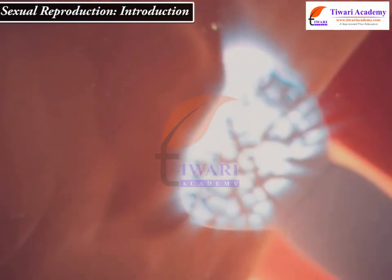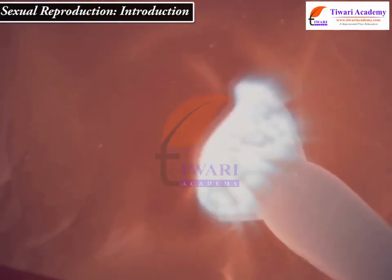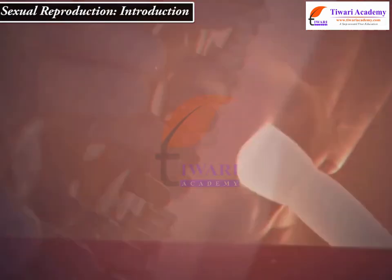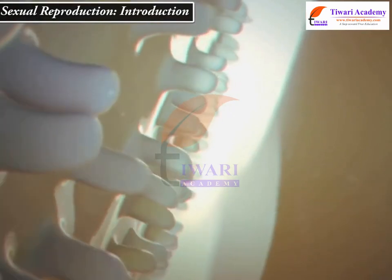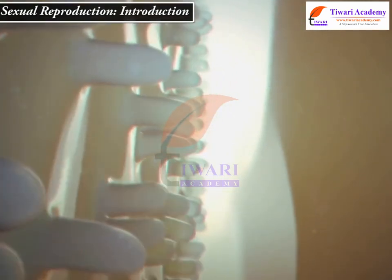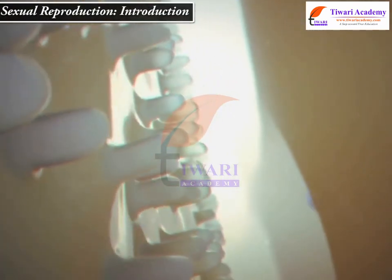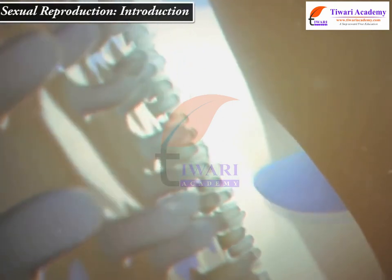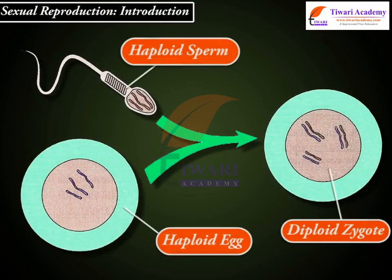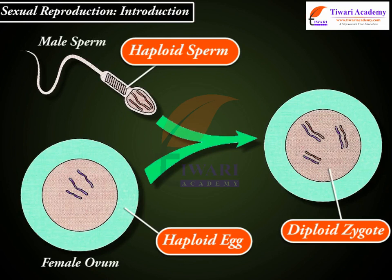The second step is called fertilization. In it, the two cells merge into one. Fertilization is what happens when a female's ovum or egg joins together with a male's sperm and they form a zygote.